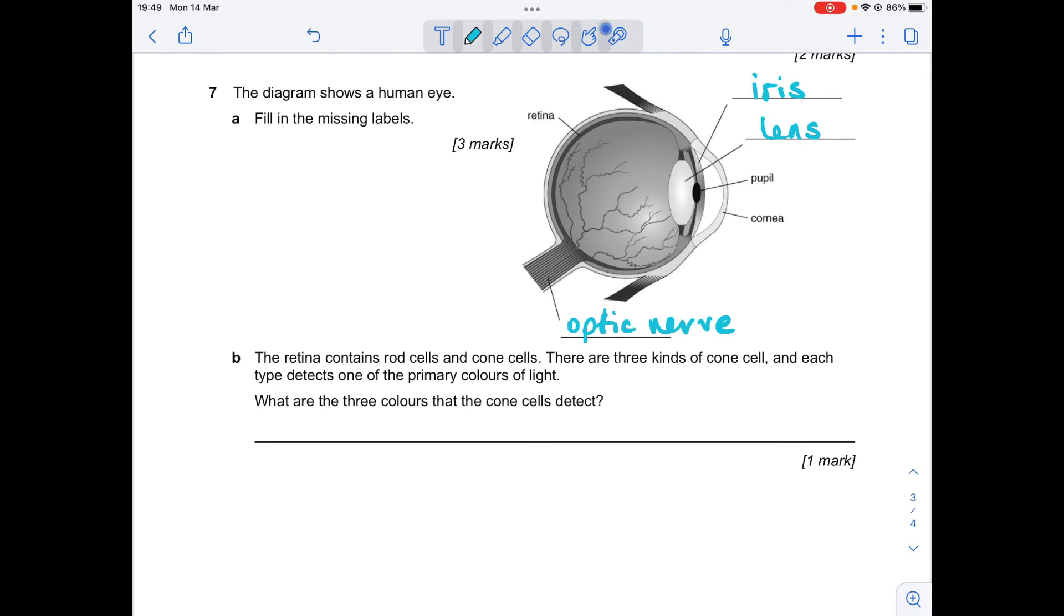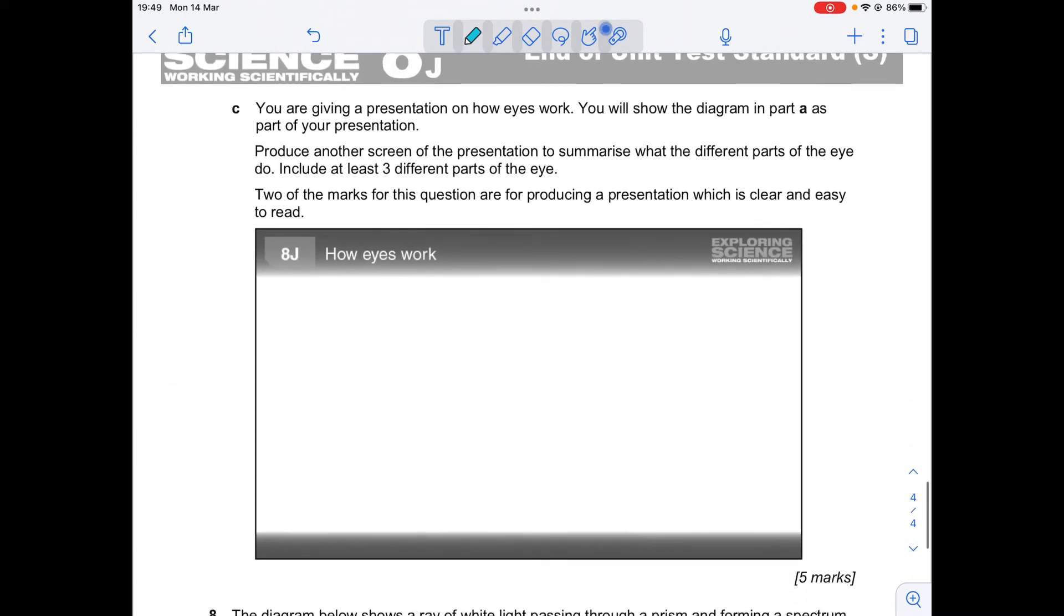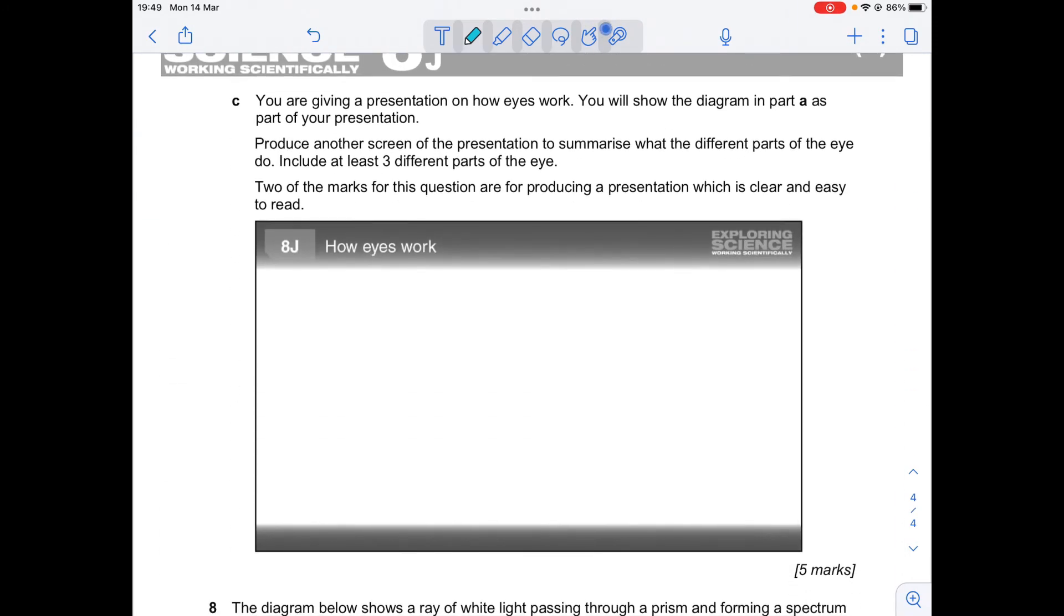The retina contains rod cells and cone cells. There are three kinds of cone cell and each type detects one of the primary colors of light. What were the three colors that the cone cells can detect? So you may remember the primary colors of light were red, green, and blue.